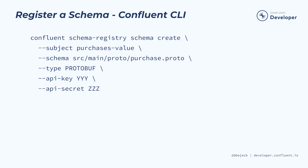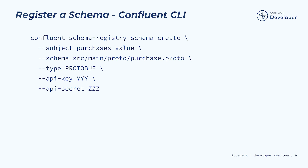With that in mind, we'll only discuss using schemas for the value for the rest of this course. Going back to the command here, note that when using Protobuf, you need to explicitly specify the schema type as Protobuf. For Avro, you don't need to provide the type — Schema Registry uses Avro by default.